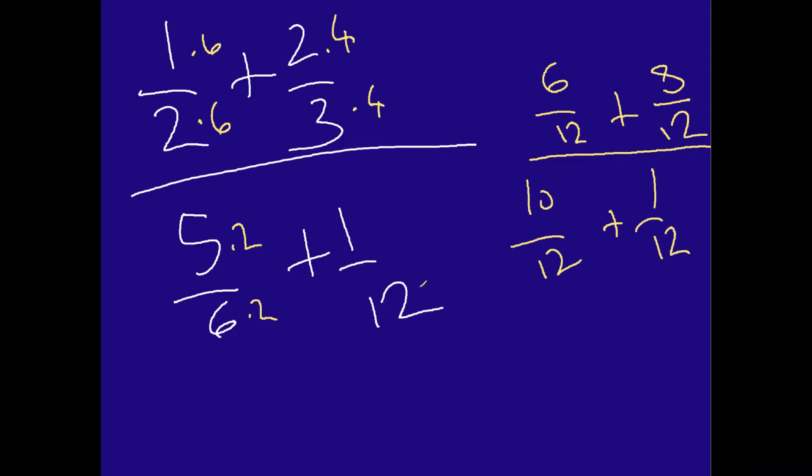And then I have 10 over 12 plus 1 over 12. Now, what I forgot to mention was is that if I really want to be strict, I will multiply this last denominator here by 1 because I already have a 12 in the denominator. So this is my new system right here.